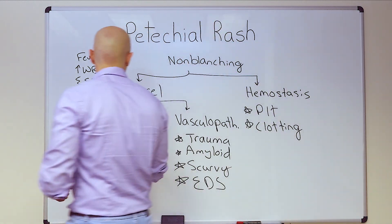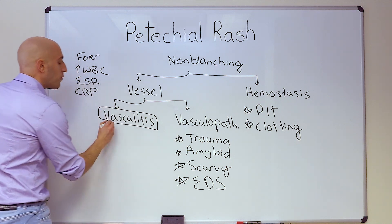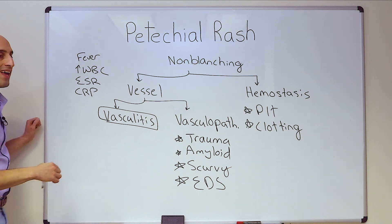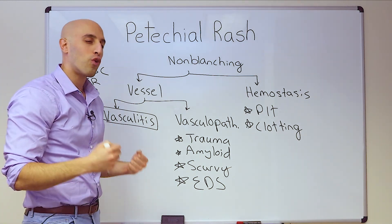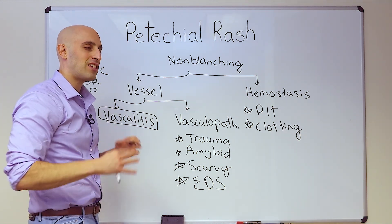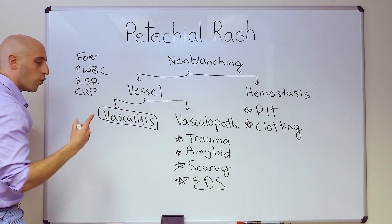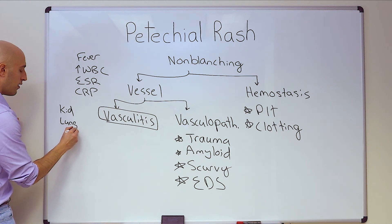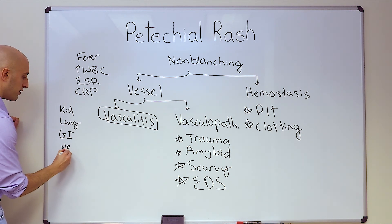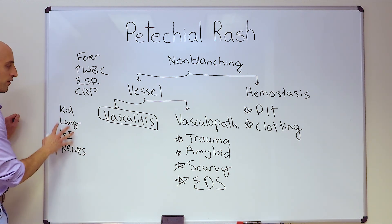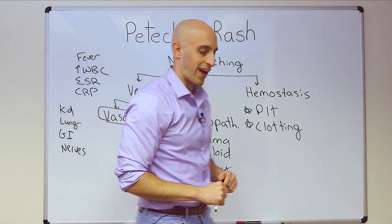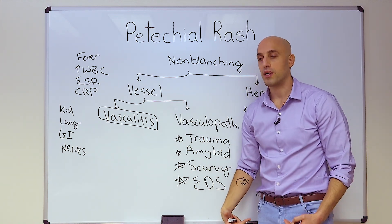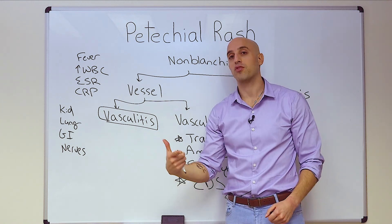When considering vasculitis, in addition to asking whether the patient is inflamed, ask whether there are other organs involved — because typically vasculitis affects multiple organs. What organs? The kidney, the lung, the GI tract, and the nerves. We'll list examples of each as we expand on vasculitis. By the way, we're talking about the lower extremity petechial rash, so this would be a small vessel vasculitis. This category can be broken up into pauci-immune or immune complex mediated.